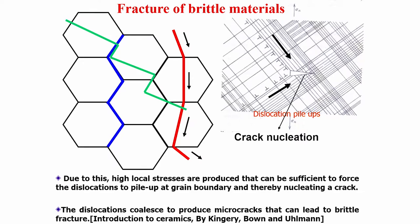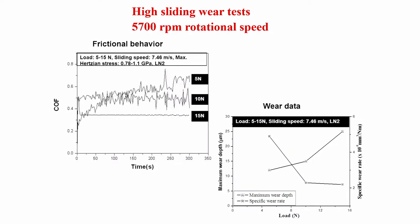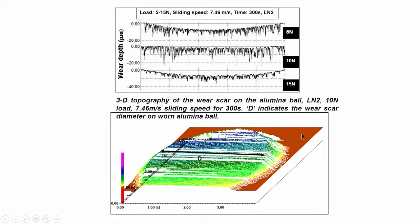There are two ways cracks can propagate during sliding: intergranular fracture, where the crack goes along grain boundaries, and transgranular fracture, where the crack path crosses the grains. In the cartoon, dotted lines indicate the potential grain that can be lifted from the worn surface through intergranular cracking. Looking at the specific wear rate, it is reduced while the maximum wear depth is increased in this particular case of alumina.